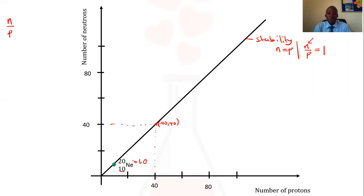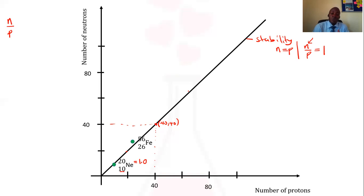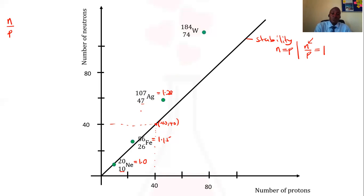Neon has a neutron-to-proton ratio of 1.0 and is therefore stable. Elements with atomic number 20 and below tend to be stable when their neutron-to-proton ratio equals 1. As we increase the number of protons, iron has 26 protons and 30 neutrons, giving a ratio of 30 over 26, which is around 1.15. Silver-107 has 60 neutrons and 47 protons, giving a ratio of around 1.28. And tungsten-184 has a neutron-to-proton ratio of around 1.49.